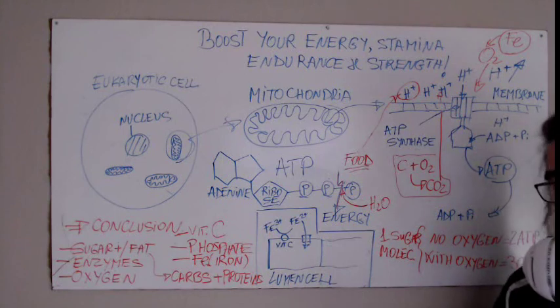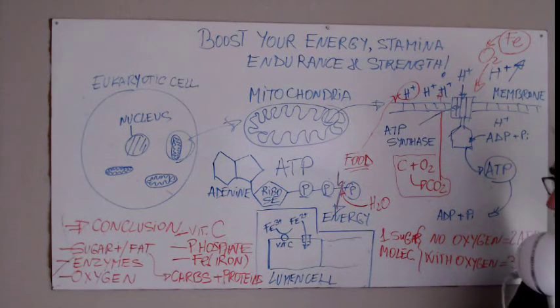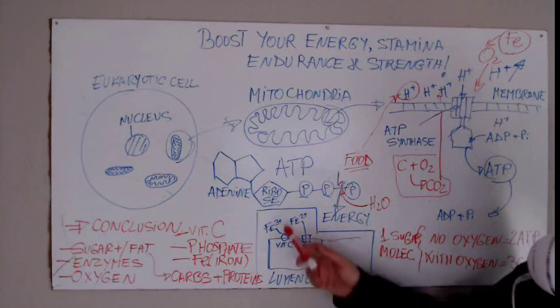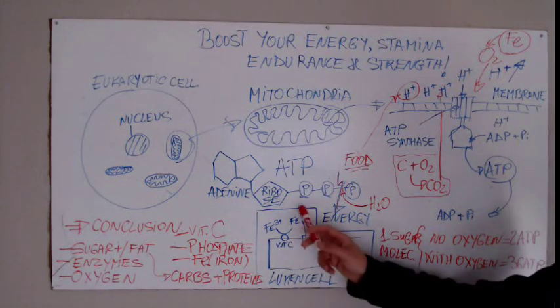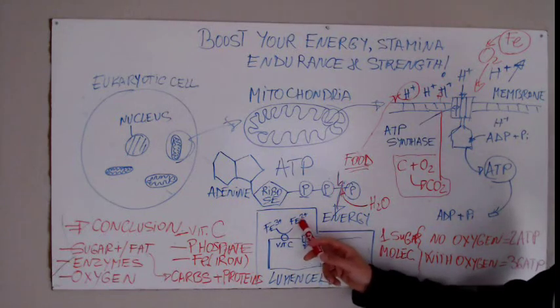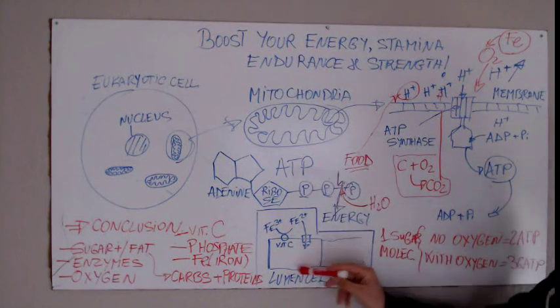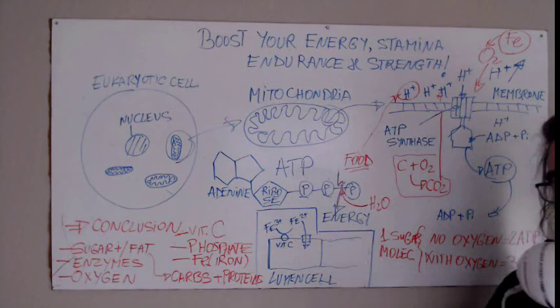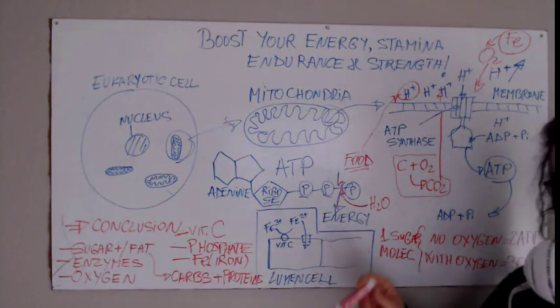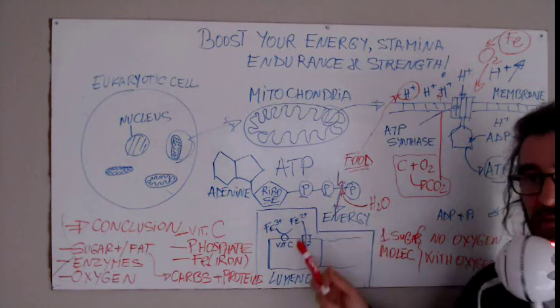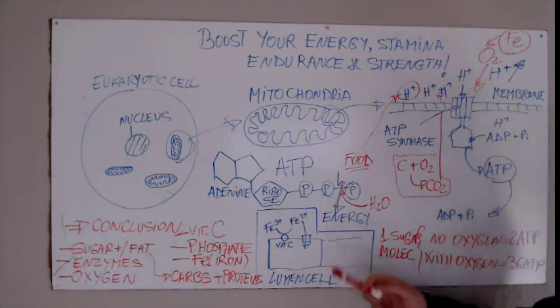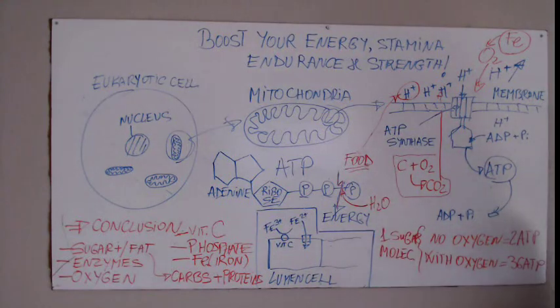It needs to be converted from ferric iron to ferrous iron, and that's done with vitamin C. It's an enzyme which is called ferroreductase. Then it's going to be able to pass through this channel inside the cell of the small intestine.